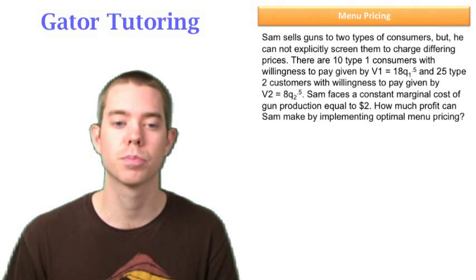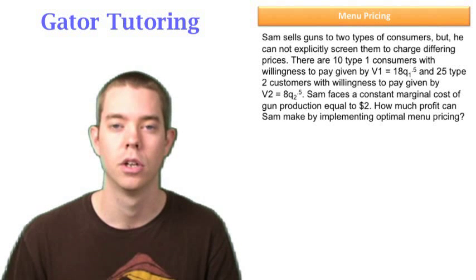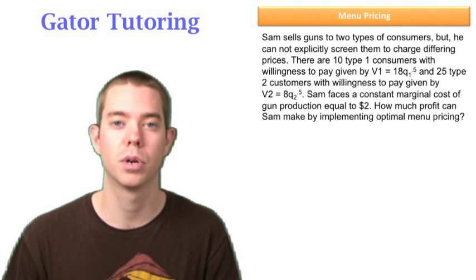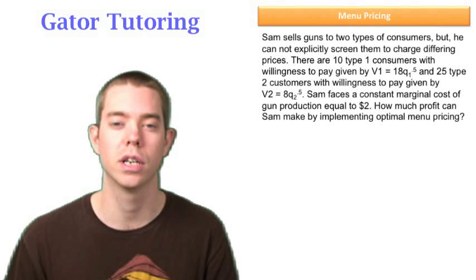It asks us how much profit can Sam make by implementing optimal menu pricing. We're just going to be finding his profit in this case, but it's a pretty long problem. There's a lot of math steps, so be careful. In all these problems, we're going to be doing participation constraints and selection constraints. Get used to those and recognizing those and knowing how to talk about them.